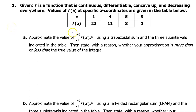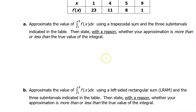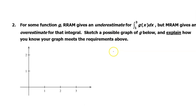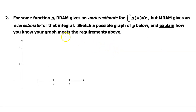In this video I will show you how to approximate the value of an integral using a Riemann sum. We will use a couple different varieties: the left rectangle approximation method and the trapezoidal sum approximation method. Later in the video I will show you how to sketch a function that will cause right rectangle approximation method to give you an underestimate while simultaneously causing the midpoint rectangle approximation method to give you an overestimate.